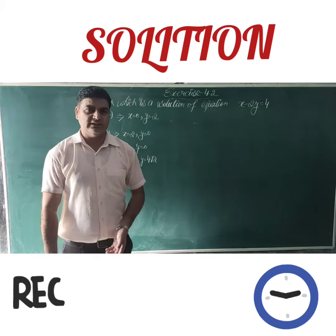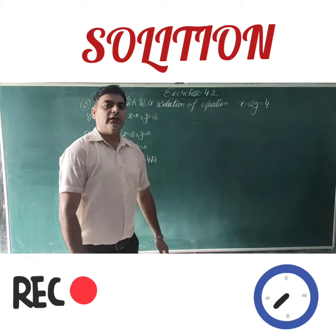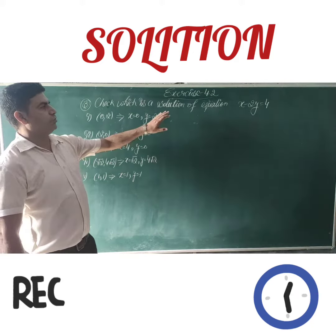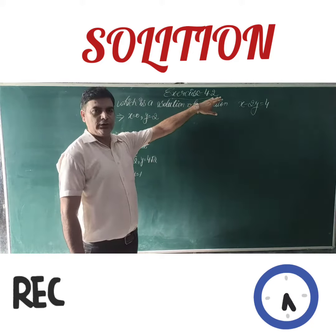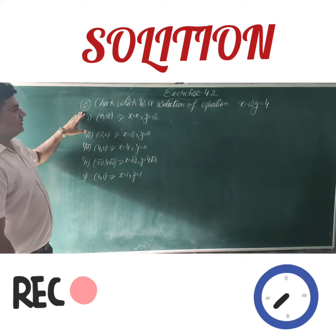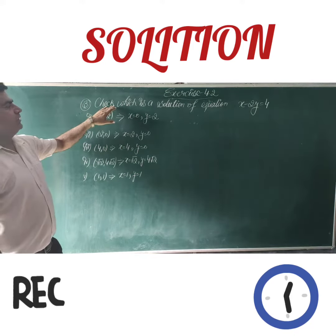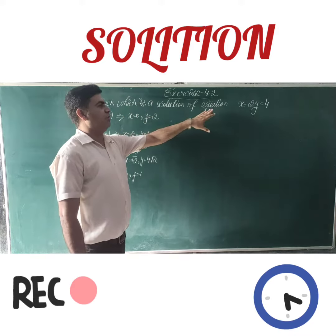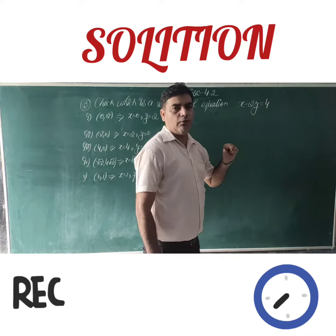Welcome to the math class. In this video, we are going to solve question from Exercise 4.2: linear equations in two variables, Question 3. We have to check which of the given points is a solution of the equation x minus 2y equals 4.